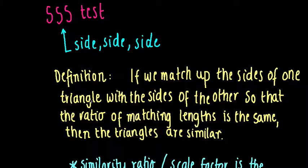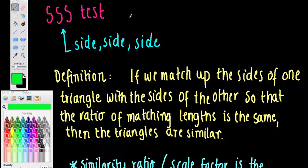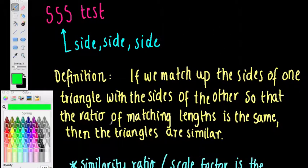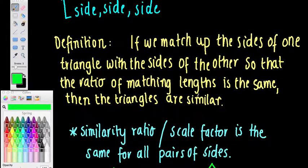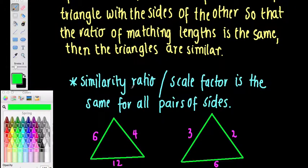The first one is the SSS test, which stands for Side-Side-Side. What the Side-Side-Side test means is: if we match up the sides of one triangle with the sides of another, and all three corresponding sides make the same ratio of lengths, then the triangles are similar. We don't need to know the angles at all — only the three sides. Essentially, the similarity ratio, also called the scale factor, is the same for each pair we match up.